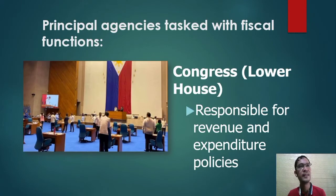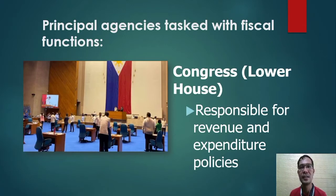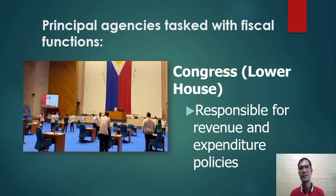There are principal agencies' tasks for fiscal functions. First, we have Congress, particularly the House of Representatives, which is responsible for revenue and expenditure policies. All policies have to start in Congress. In the budget preparation, after the preparation of respective PAPs — programs, activities, and projects in a department — the budget has to be deliberated in Congress.